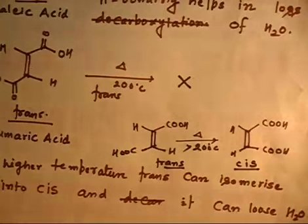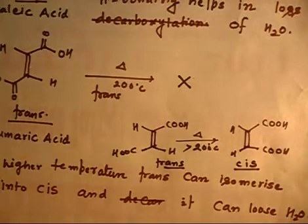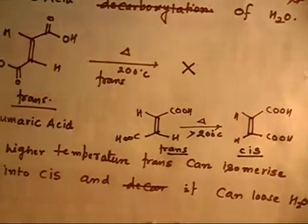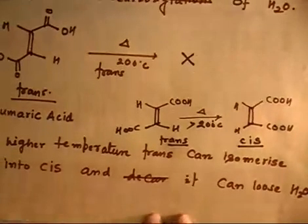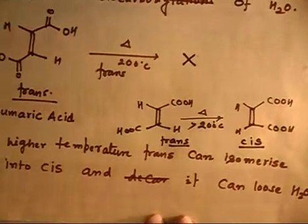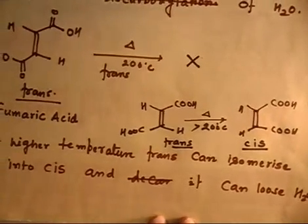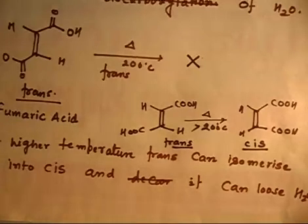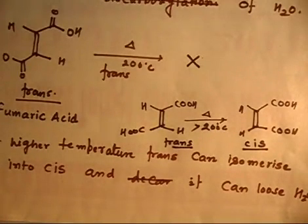And then you can do dehydration — you can form the anhydride. So the cis form can lose H₂O. The trans form can only lose H₂O at higher temperature when it first isomerizes into the cis form, and then it can lose the water molecule.